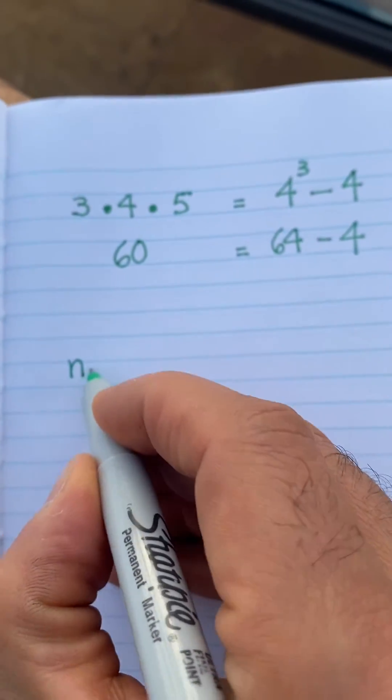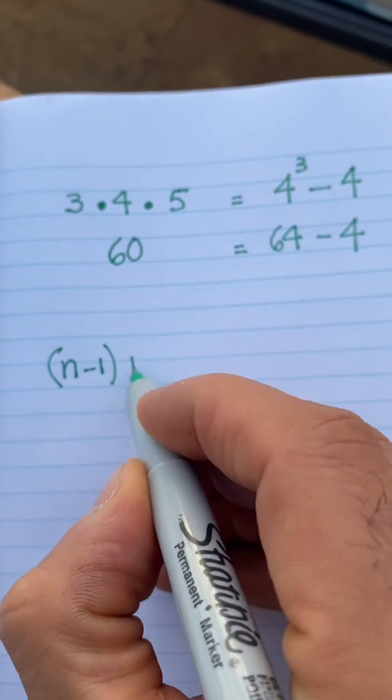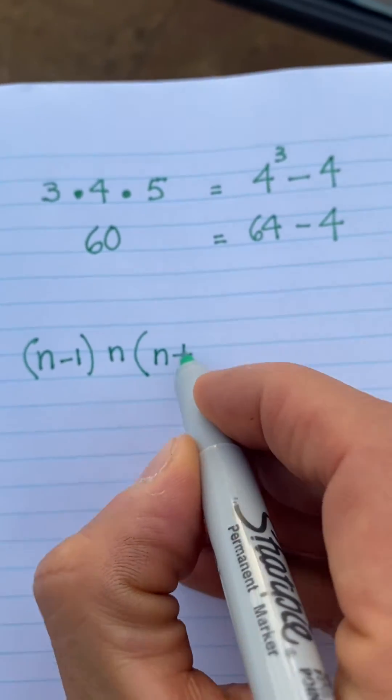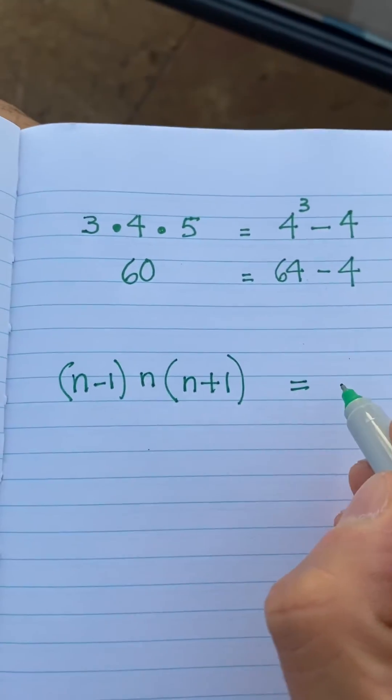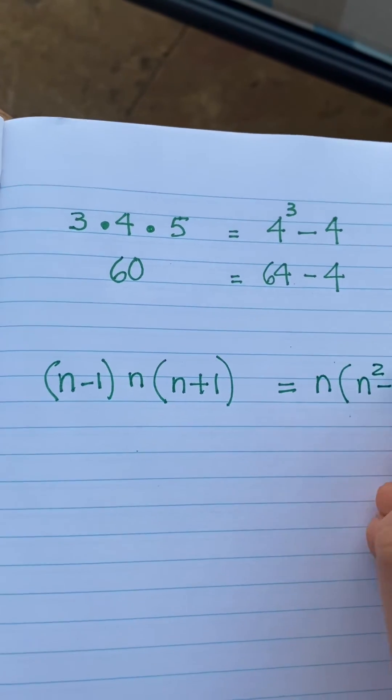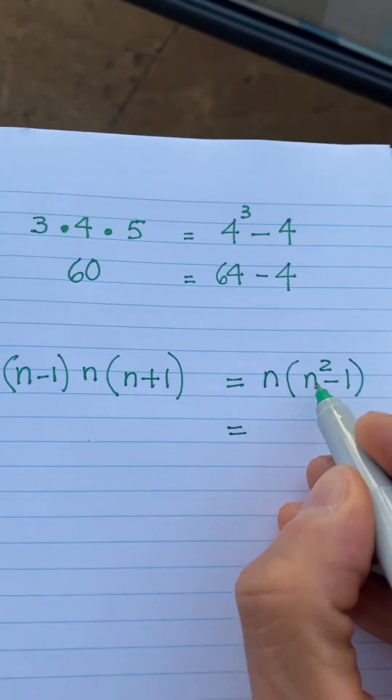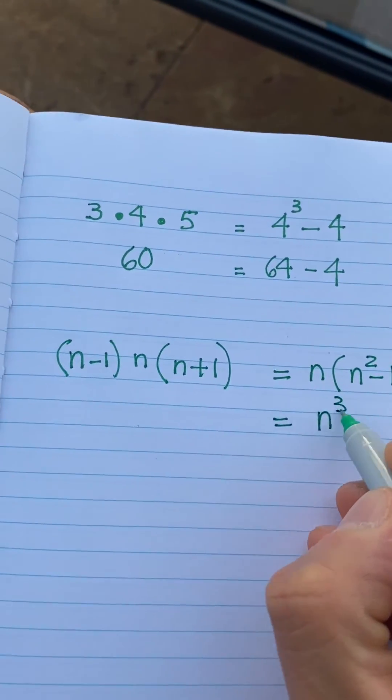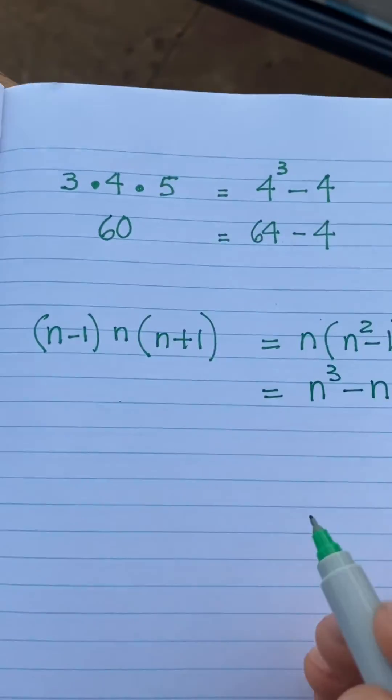(n-1) × n × (n+1), if you do the math, this is really nothing more than n(n²-1), and if you distribute the n, it's n³-n. That's where it comes from.